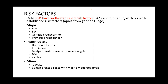The intermediate factors include hormonal factors such as prolonged exposure to estrogen, previous irradiation, benign breast diseases with atypical hyperplasia, diet, and alcohol. Minor risk factors include obesity, especially in post-menopausal women, and benign breast disease with mild to moderate hyperplasia.